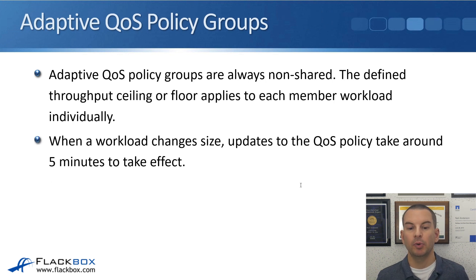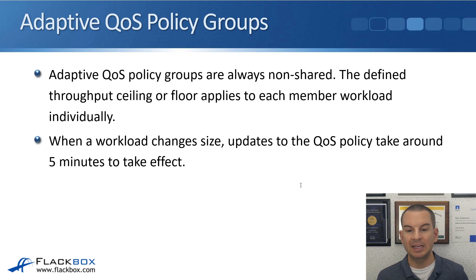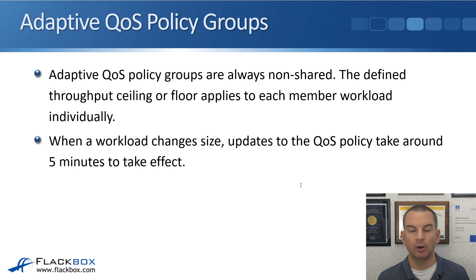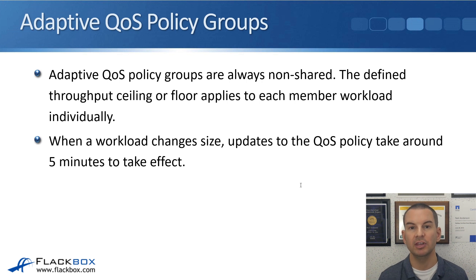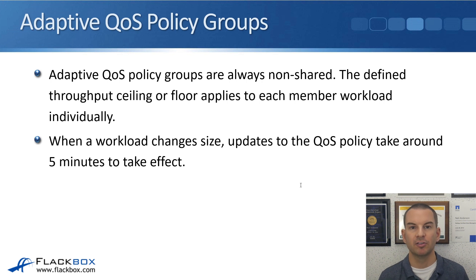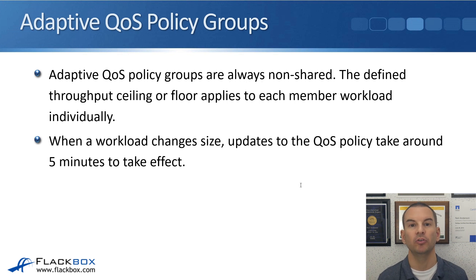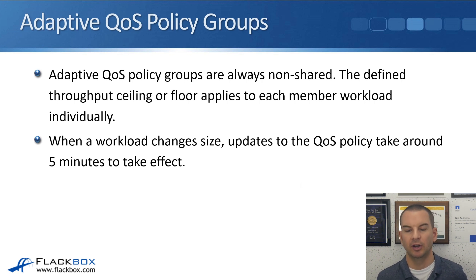Adaptive QoS policy groups are always non-shared — the defined throughput ceiling or floor applies to each member workload individually. When a workload changes size, updates to the QoS policy take around five minutes to take effect, just like when you first configure a policy. Adaptive QoS can also be used for files and LUNs, not just volumes.